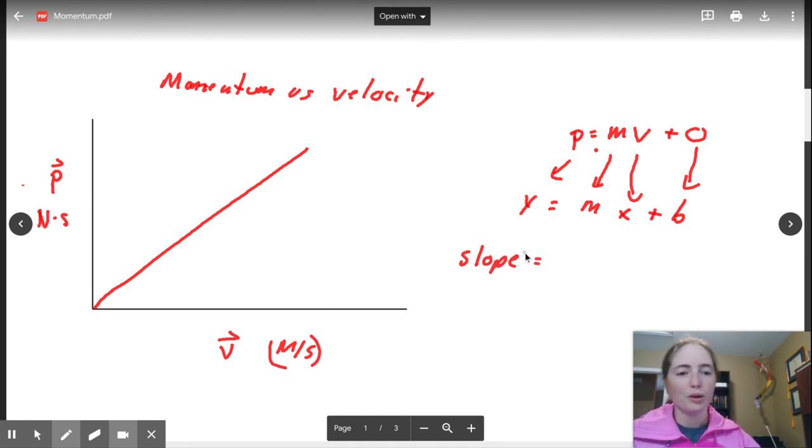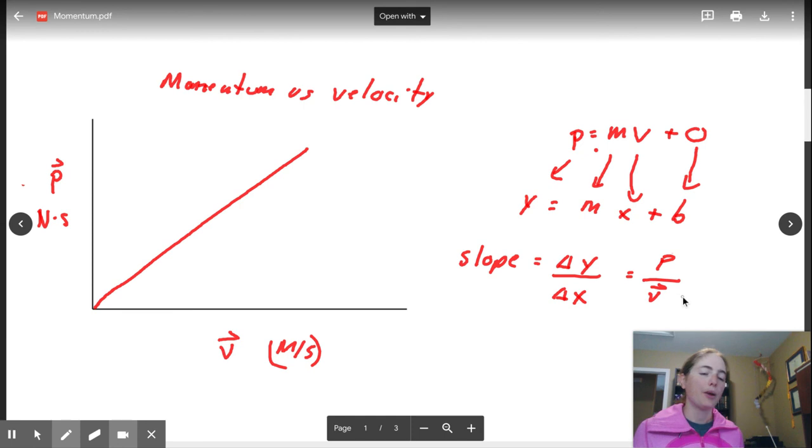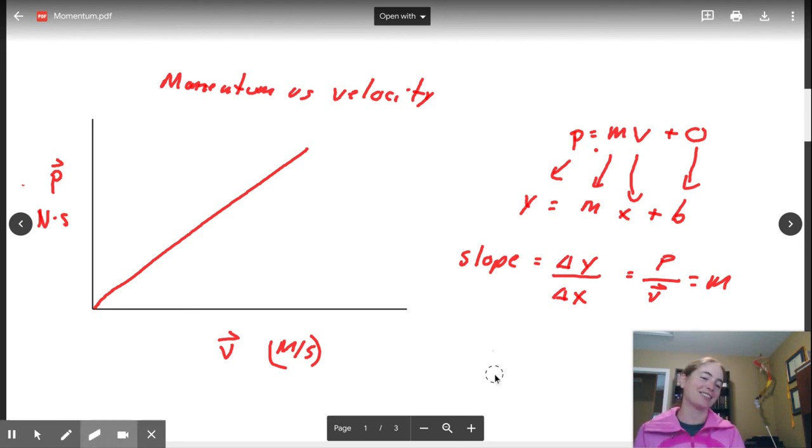And ladies and gentlemen, let's look at what our slope is going to mean. Our slope is going to equal delta y over delta x. Our slope is the change in momentum over the change in velocity. So that means your slope equals momentum over velocity. When you look at p equals mv and we divide out that velocity, we're left with mass. So our slope is going to represent the mass of the object.